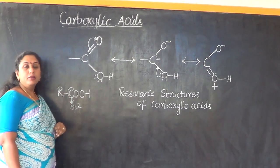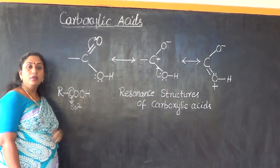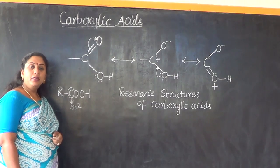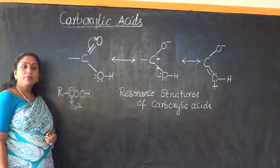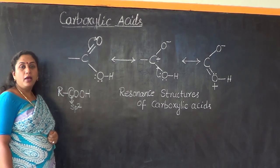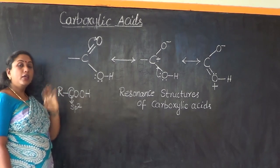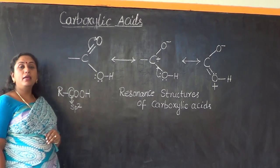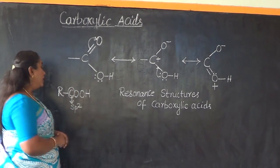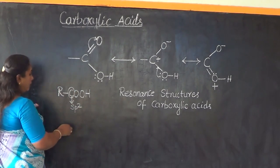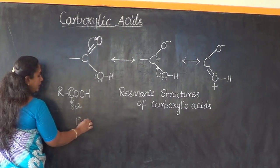The carbon atom of the carboxylic acid has undergone SP2 hybridization, forming 3 SP2 hybridized orbitals. All 3 SP2 hybridized orbitals lie in the same plane and they maintain a bond angle of 120 degrees.